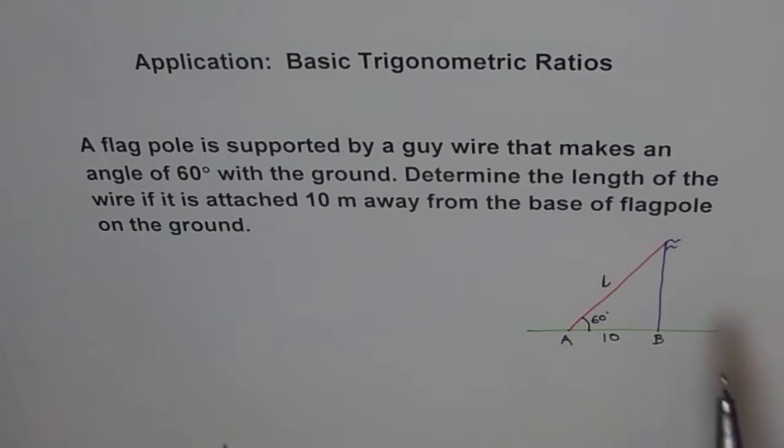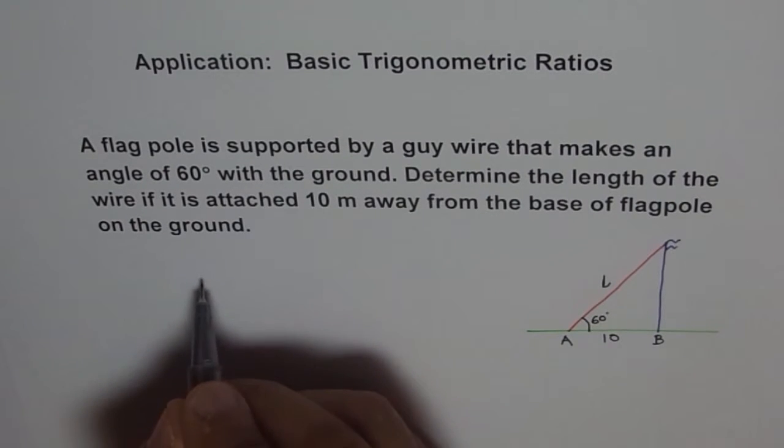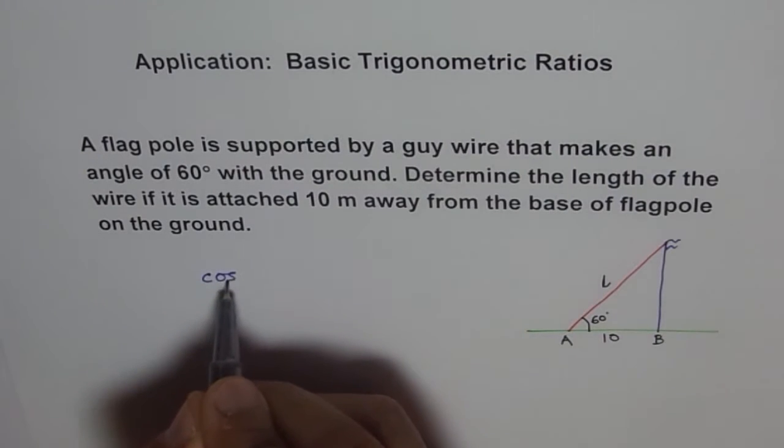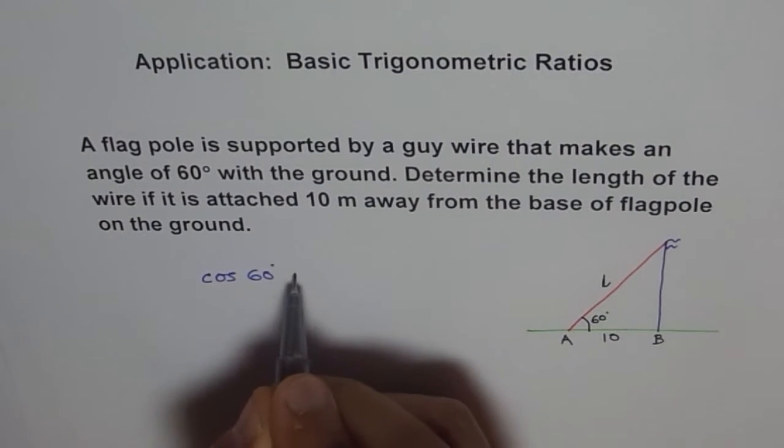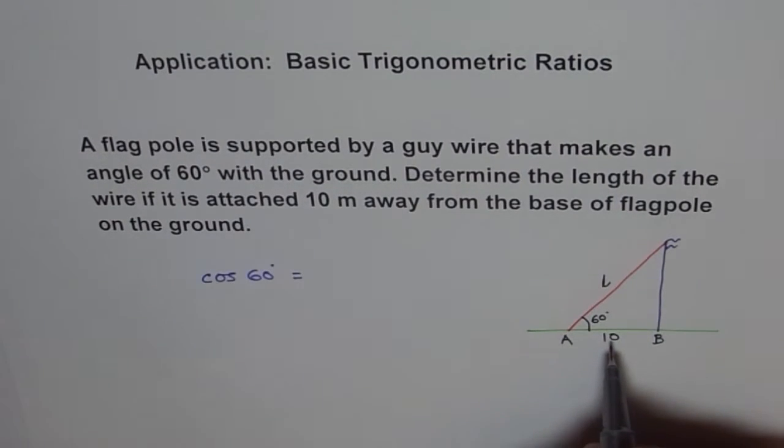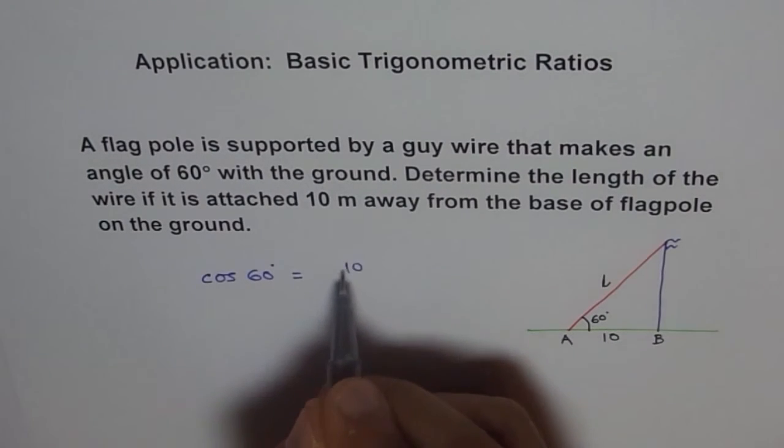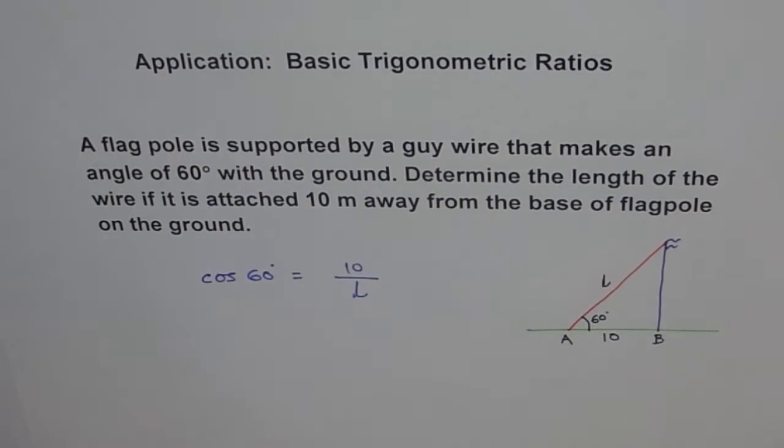Now, what should you use? We know the adjacent side and we want the hypotenuse. For adjacent and hypotenuse, SOHCAHTOA - cosine. Cosine is adjacent over hypotenuse. So we use cosine here and we say cos 60 degrees equals the adjacent, which is 10, over L, the hypotenuse.